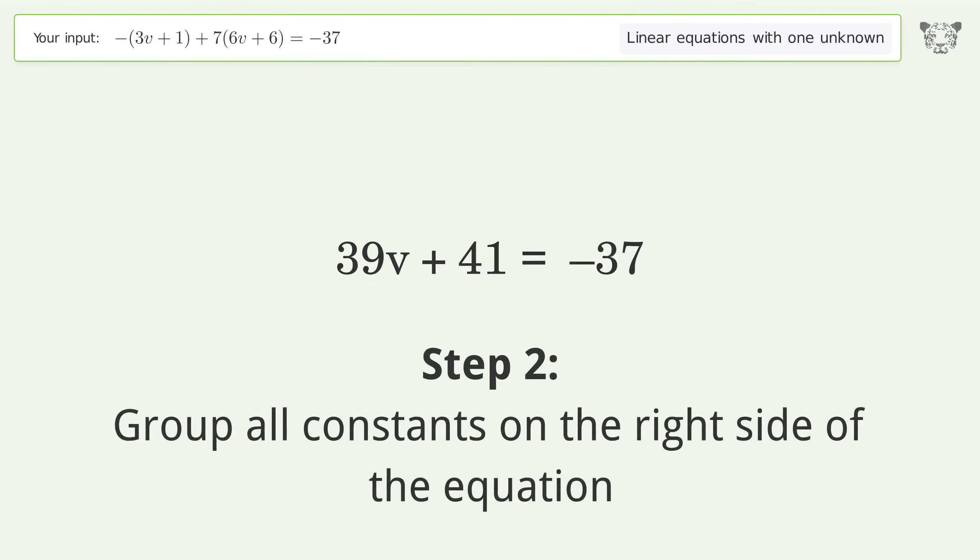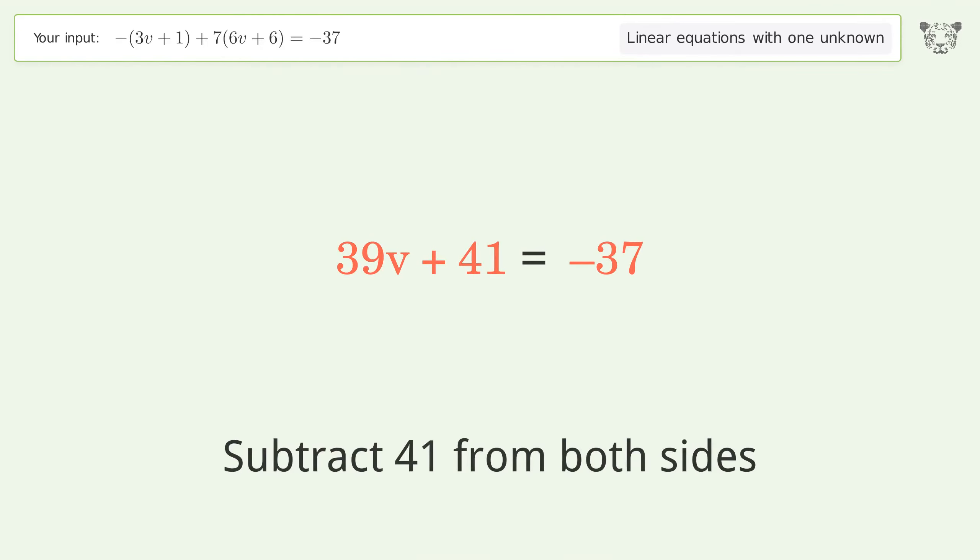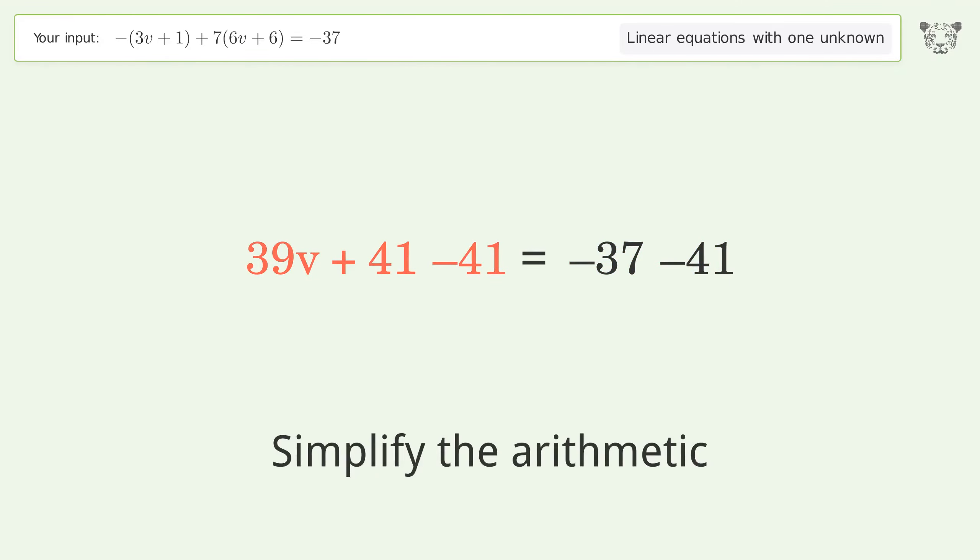Group all constants on the right side of the equation. Subtract 41 from both sides and simplify the arithmetic.